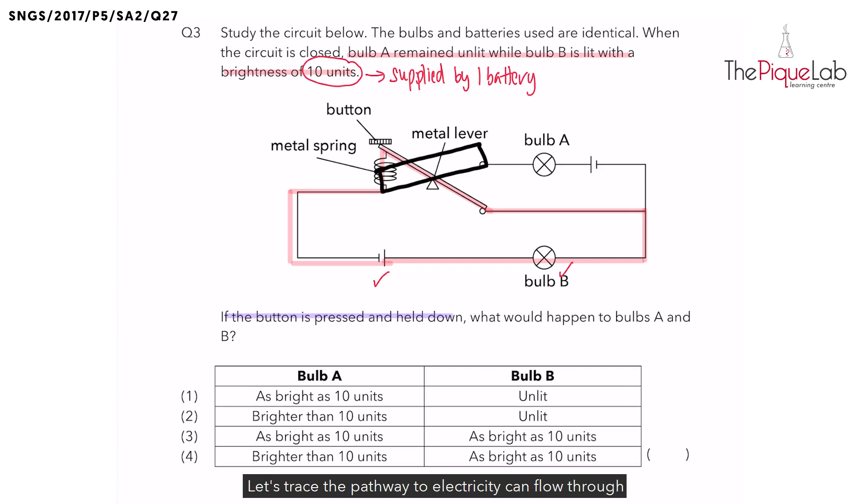Let's trace the pathway that electricity can flow through when the metal lever is in this new position using a new color. So, electricity will move through the wire, up this wire, through bulb A, down the metal lever, and back to the batteries.